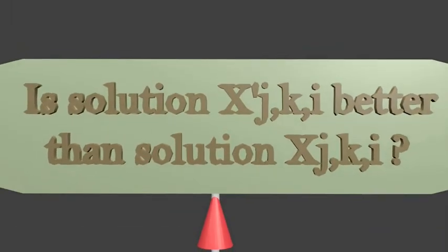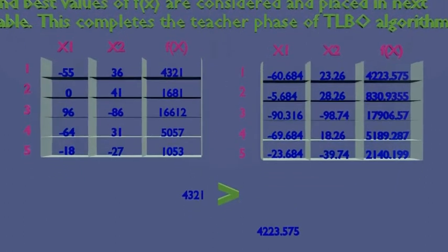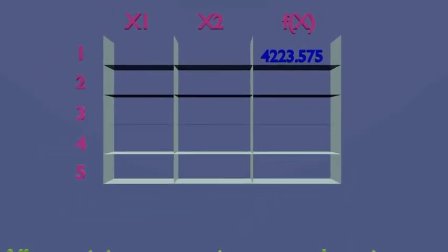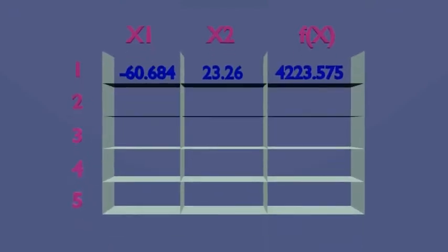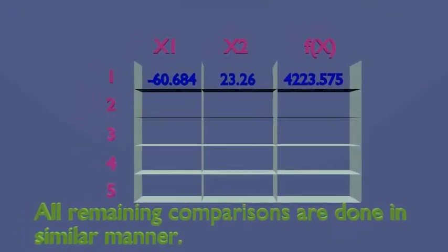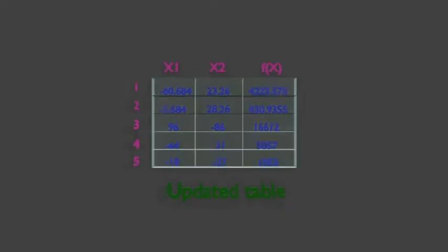Our next step is to compare the previous two tables and update the solutions in the next table. The values of f(x) of the following tables get compared as shown, and the best or minimum value gets placed in the next table. This completes the teacher phase of the algorithm. As we see, the minimum value is getting placed in the next table and the corresponding values of x1 and x2 also get placed. All remaining comparisons are done in a similar manner and finally we get the updated table based on fitness comparisons.